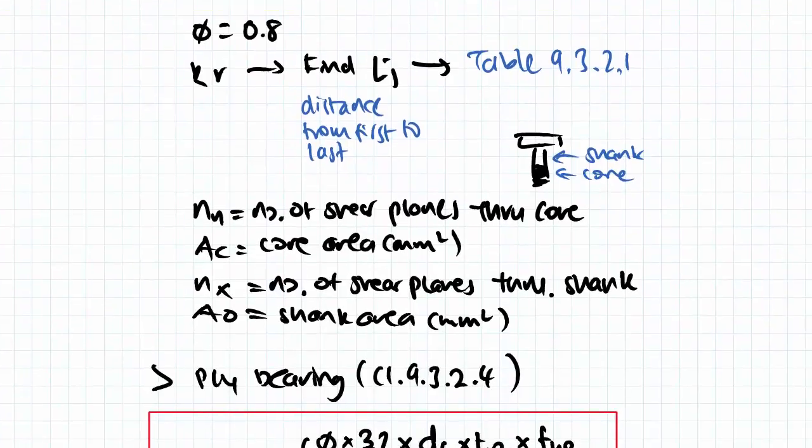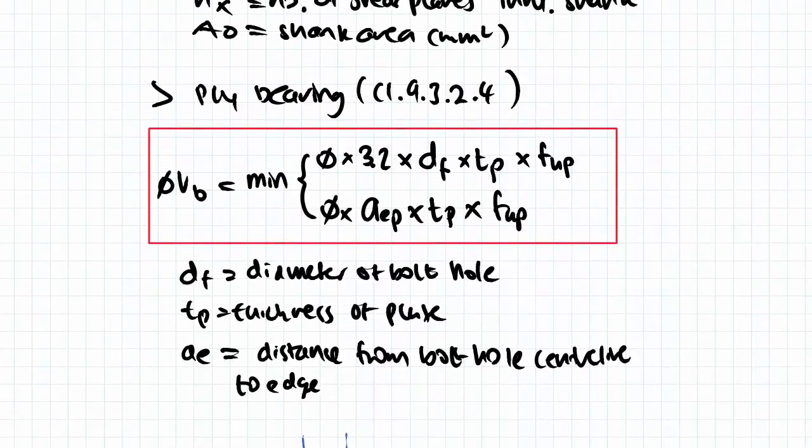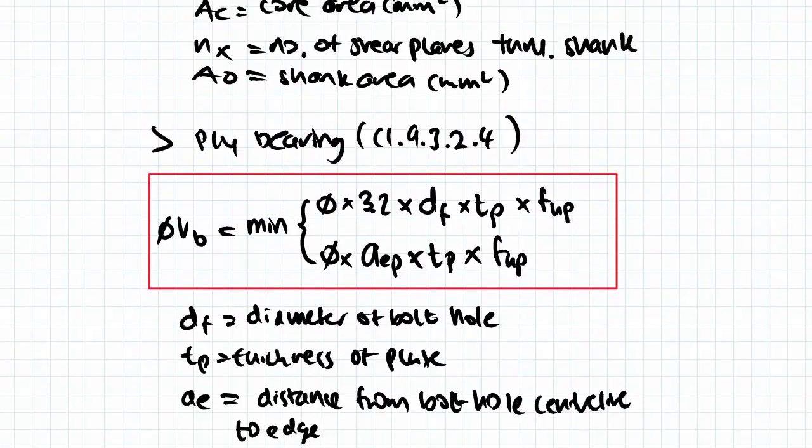So now we move on to ply bearing. Ply bearing involves two sort of failure modes in itself. So ply bearing can either be a crushing or bearing of the edge of the plate, or a complete tear out. So the equation at the top is a bearing, and the one at the bottom is a tear out. So we need to actually find the capacity.